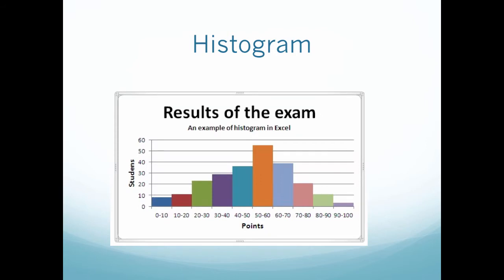Here's an example of a histogram. A simple example is test results. If we were to split test scores from a class into equal intervals of 10 points each, these are our bins. Then we would know how many students scored within these 10-point increments. As a teacher, this is useful to visualize so we can see the most amount of students scored between this number and this number.